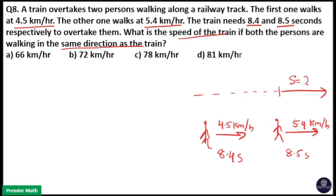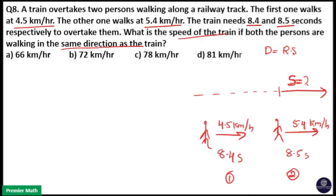I will take the speed of the train as S. This is the first case and this is the second case. I will equalize the distance in both cases, because the distance covered while overtaking the first person and the distance covered while overtaking the second person are both the same. Distance is equal to relative speed into time.